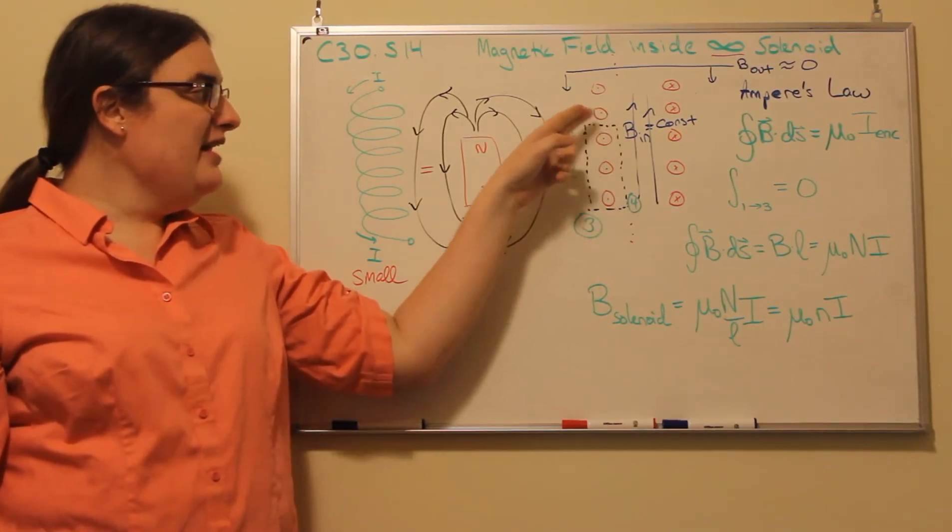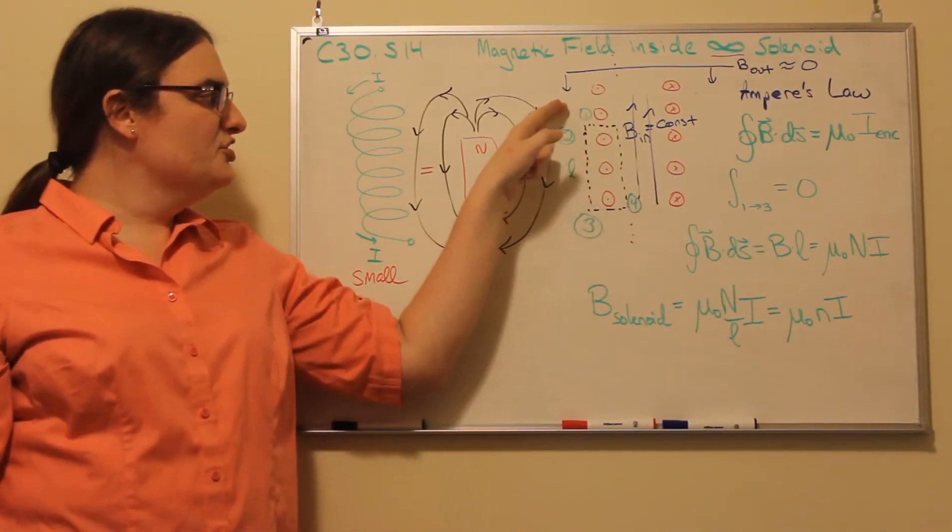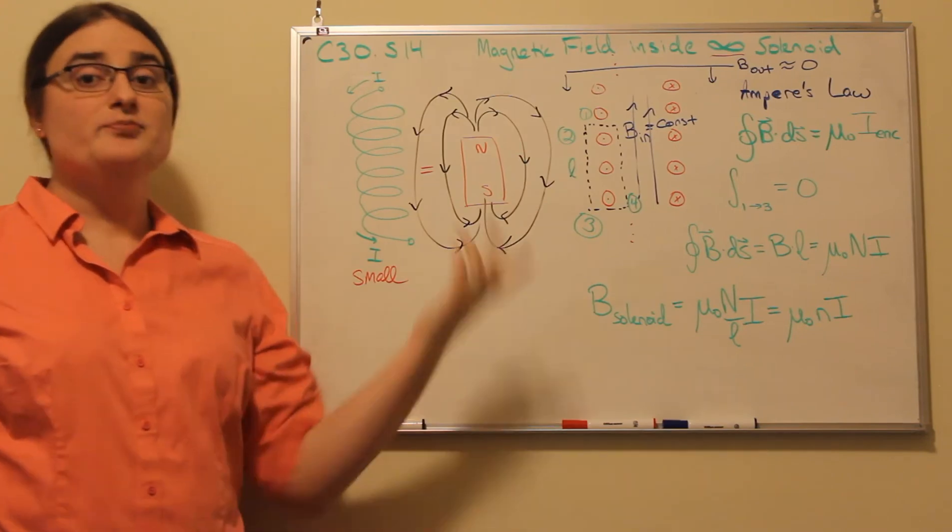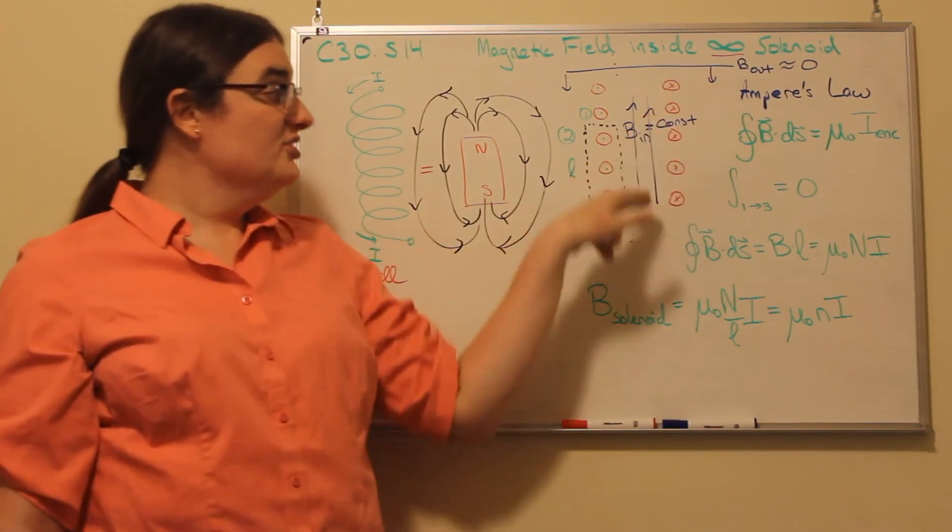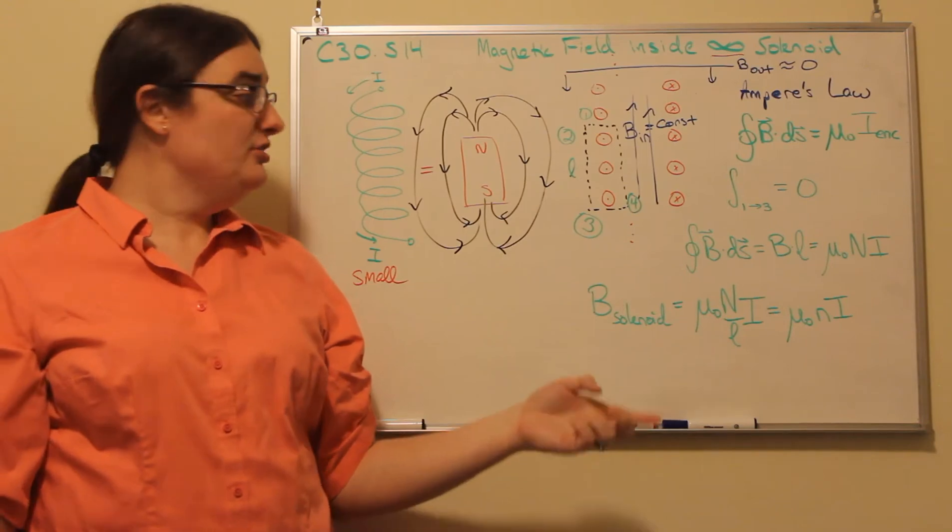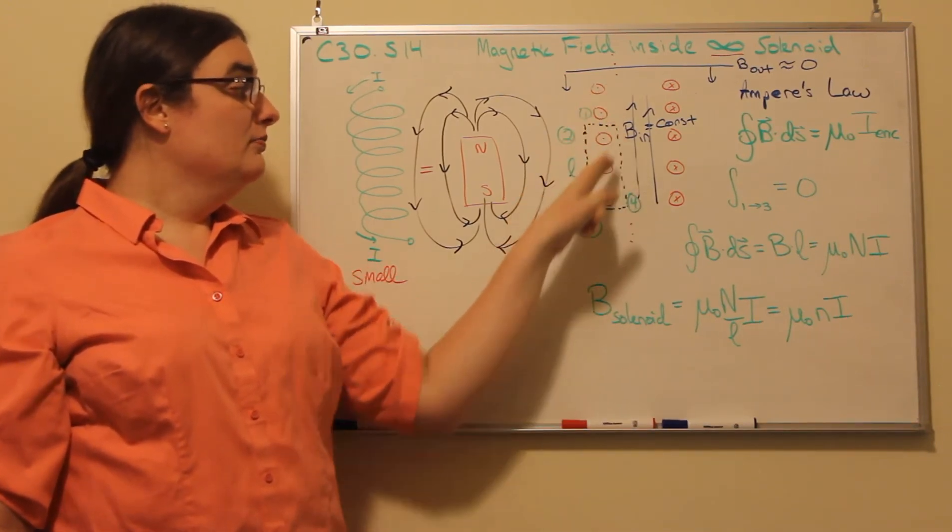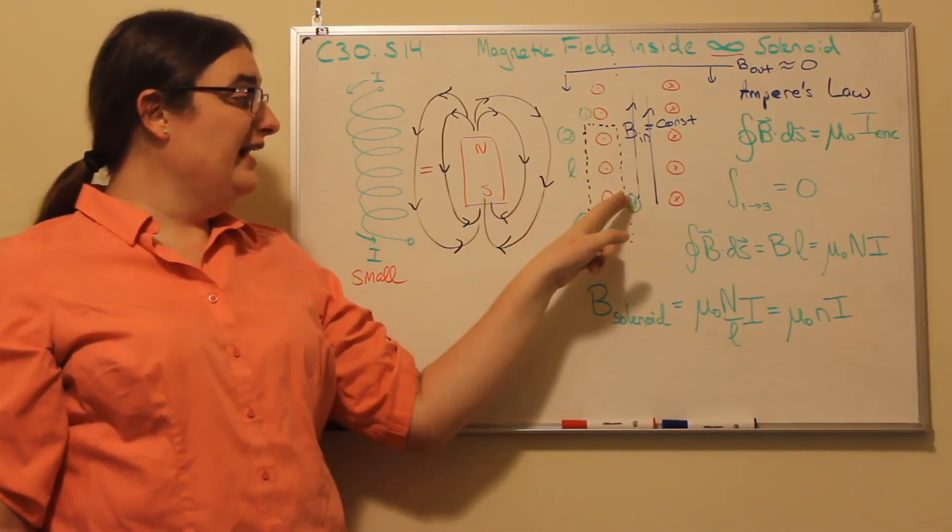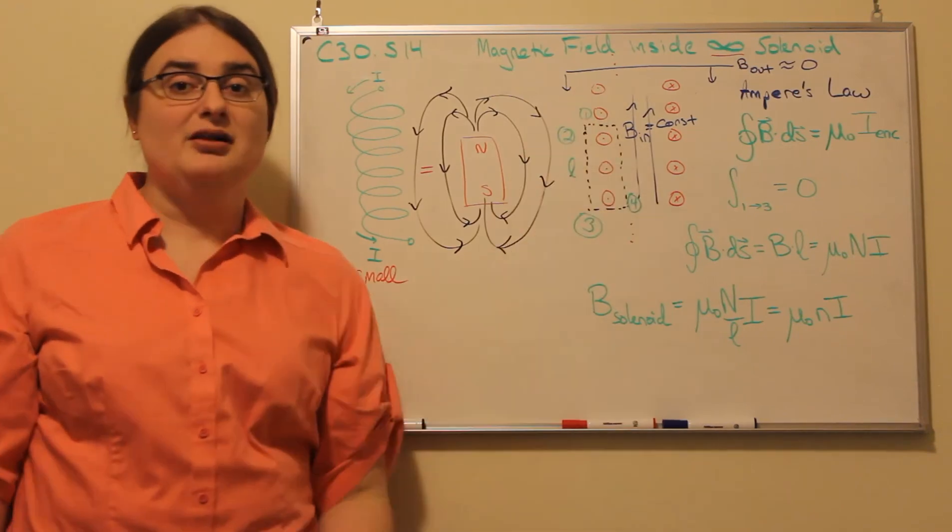three of those four parts contribute nothing to the magnetic circulation, because the net magnetic field in regions one, two, and three is going to be zero.